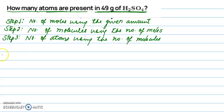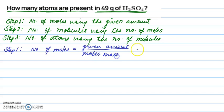Let's begin with step one. We'll have to find the number of moles. Number of moles equals given amount divided by molar mass. The given amount of H2SO4 is 49 grams and the molar mass is 98 grams per mole. On solving this, we get 0.5 moles.